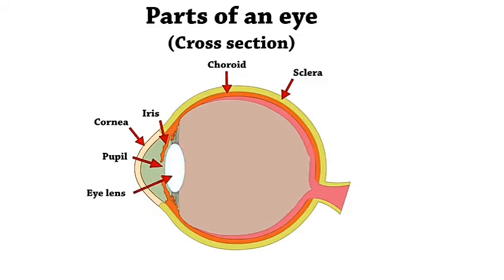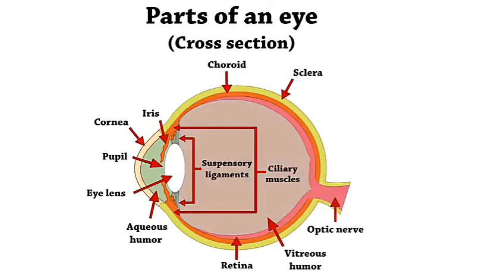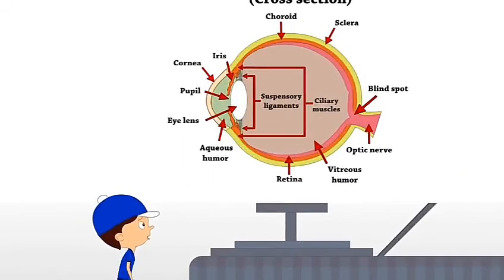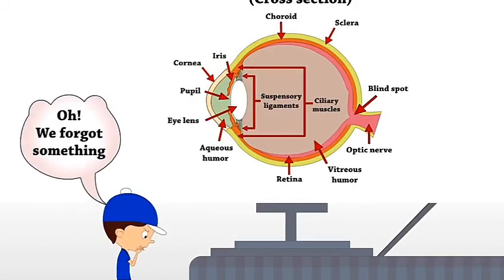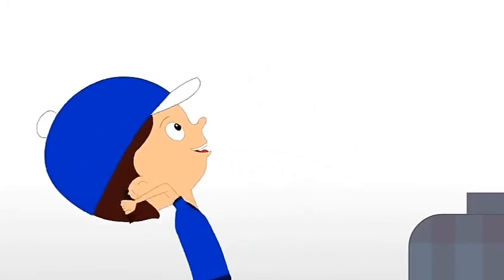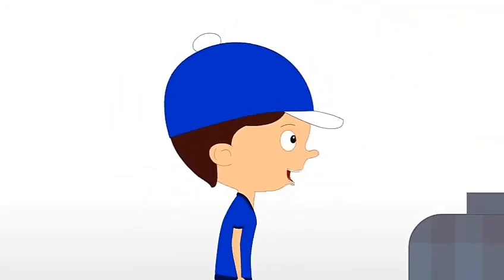Eye lens, ciliary muscles, suspensory ligaments, aqueous humor, retina, vitreous humor, optic nerve, blind spot, macula, fovea centralis.